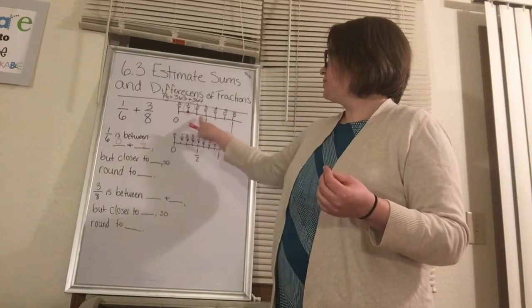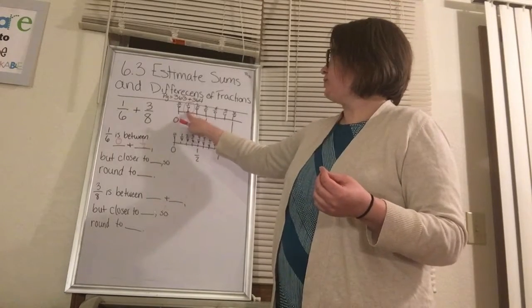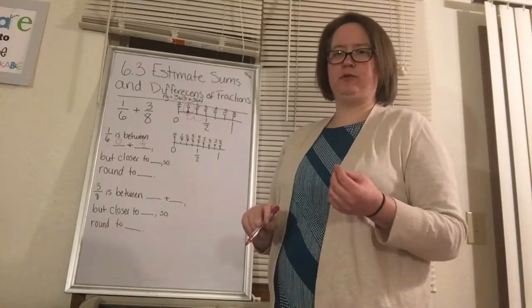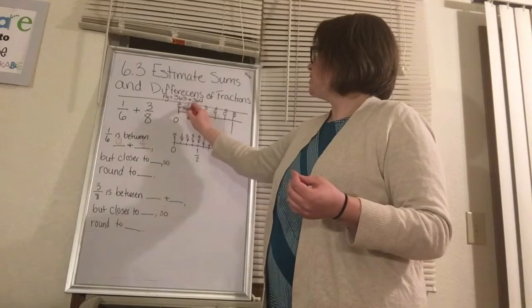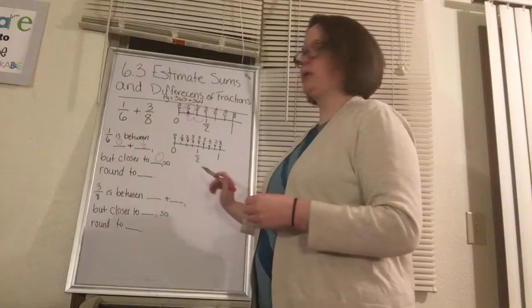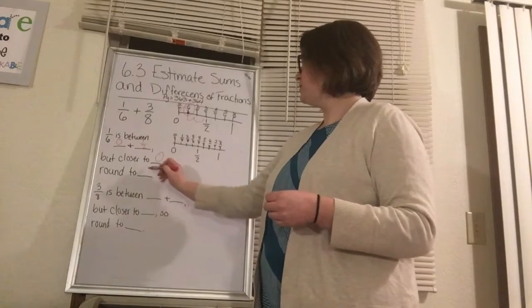Now, which is it closest to? Well, here's the 1/2. It has to go 1, 2 jumps to get to the 1/2. It only has 1 jump to get to the 0, so it's closest to the 0. So we're going to round to 0.